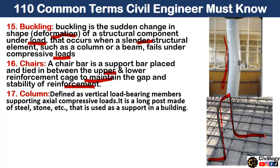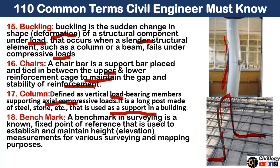Point 17 is column. A column is defined as a vertical load-bearing member supporting axial compressive load. It is a long post made of steel, stone, etc., that is used to support a building.